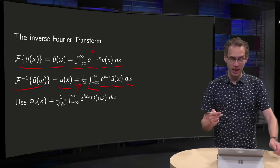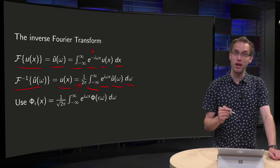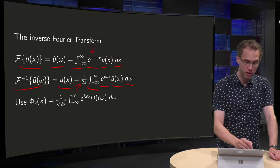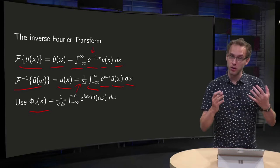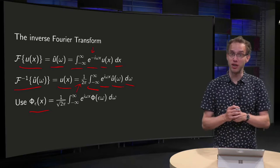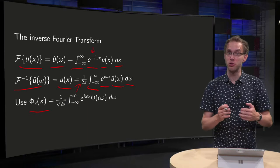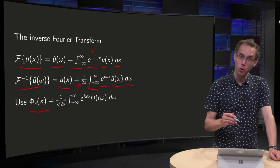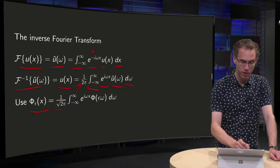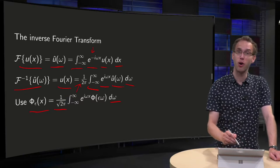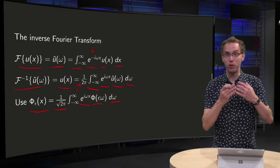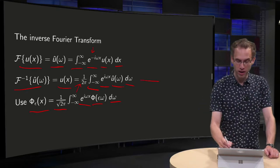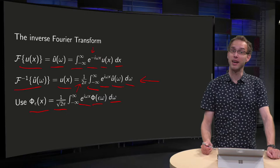But why is this true? For that we use a lemma found earlier: φ_ε(x), an approximation of the delta function, becomes a delta function as ε goes to zero. You can also write this as an integral: (1/√(2π)) times the integral with respect to ω of e^(iωx) · φ(εω). We are going to use this lemma to prove why the Fourier inversion formula is true.